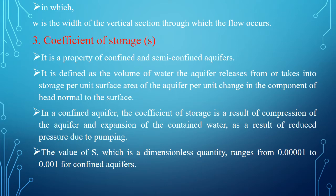The next important property of the aquifer is the coefficient of storage, or storage coefficient, denoted by letter S. It is a property of confined and semi-confined aquifers only. It is defined as the volume of water the aquifer releases from or takes into storage per unit surface area of the aquifer for a unit change in the component of head normal to the surface. In a confined aquifer, the coefficient of storage results from compression of the aquifer and expansion of the contained water due to reduced pressure from pumping. The value of storage coefficient is a dimensionless quantity and may range from 0.00001 to 0.001 for confined aquifers.